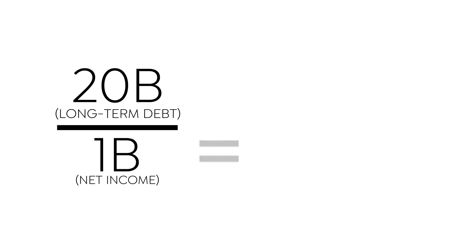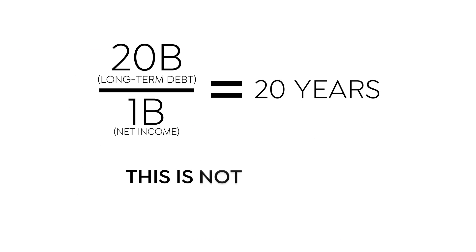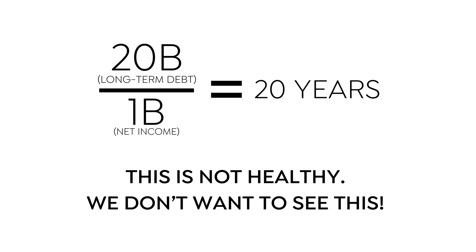What you don't want to see is a company with, say, a billion dollars in net income but $20 billion in long-term debt. That would indicate the company would take 20 years to pay back its long-term debt based on its net income levels. That's an unhealthy, unmanageable long-term debt balance — it indicates the company is stretching itself too thin and will be using the bulk of its cash paying off debt rather than reinvesting in the company, issuing dividends, or increasing the stock price.